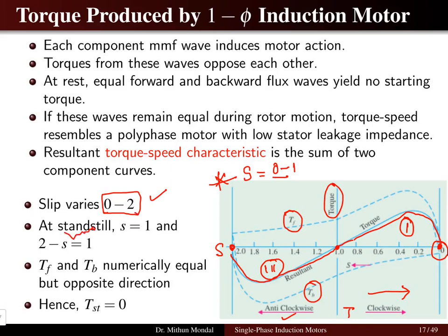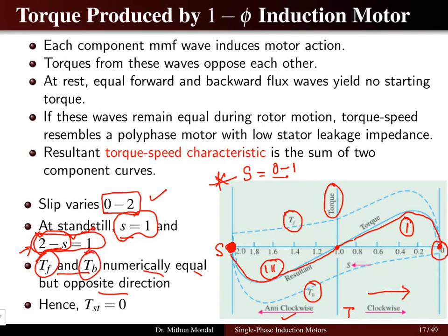At standstill condition, in a three-phase induction motor slip is 1. Here we have two slips: one due to the forward condition, where slip equals 1, and another which is 2 minus slip, also equal to 1. The maximum slip becomes 2, and the forward and backward torques are numerically equal but opposite in direction, so the starting torque is zero. The single-phase induction motor has no starting torque.